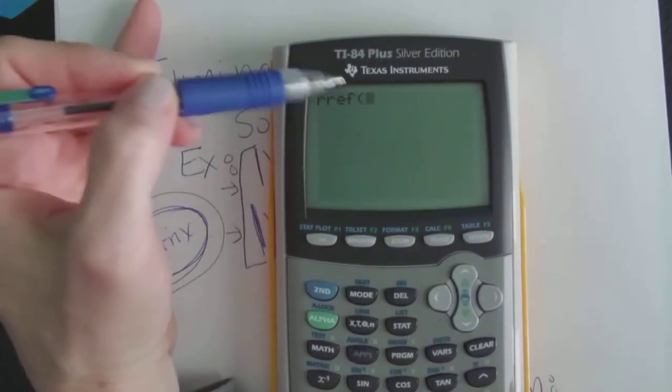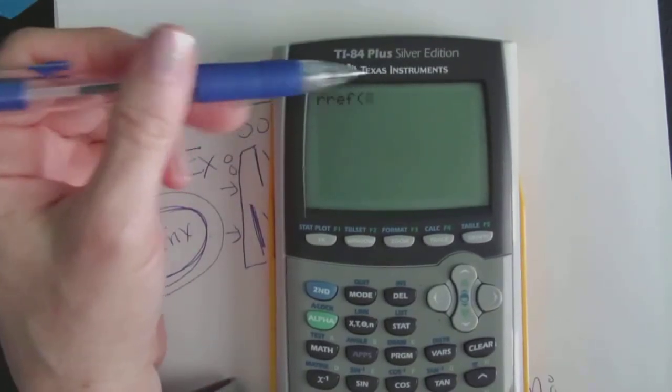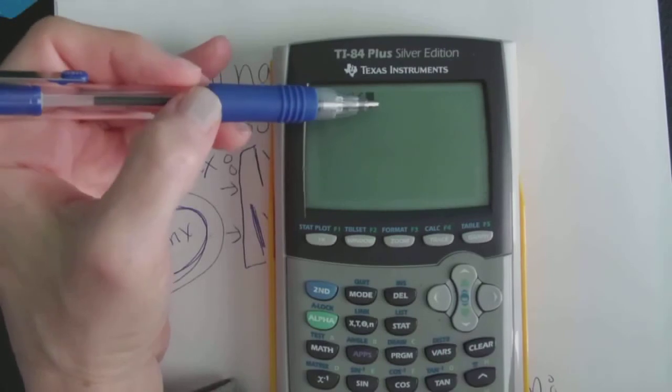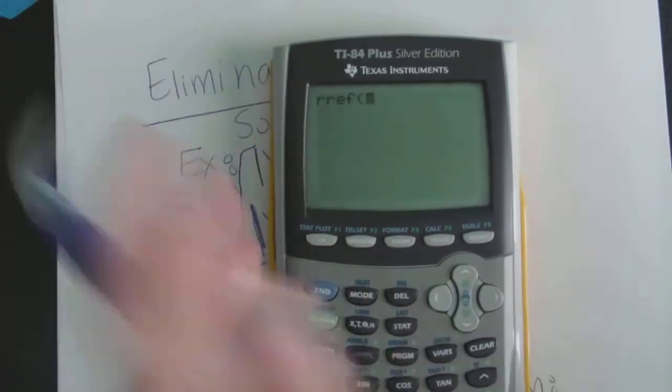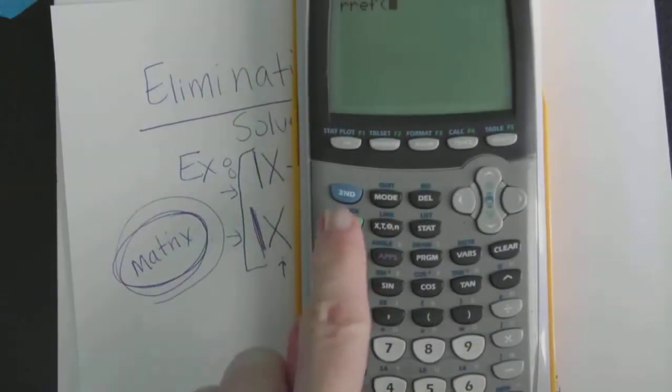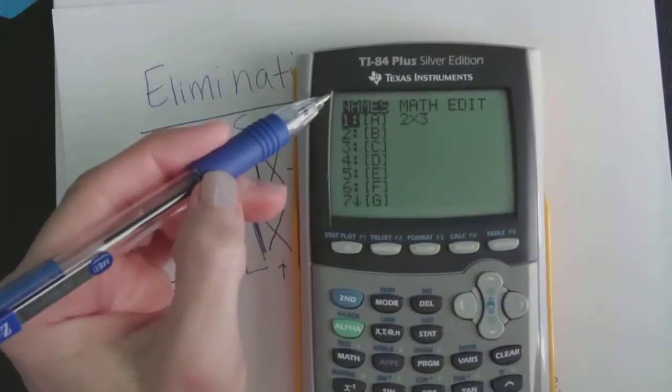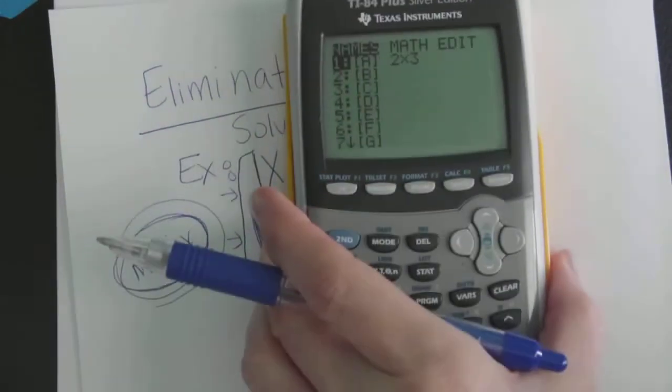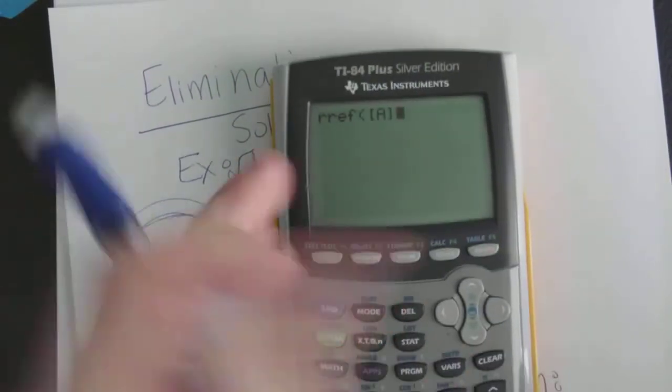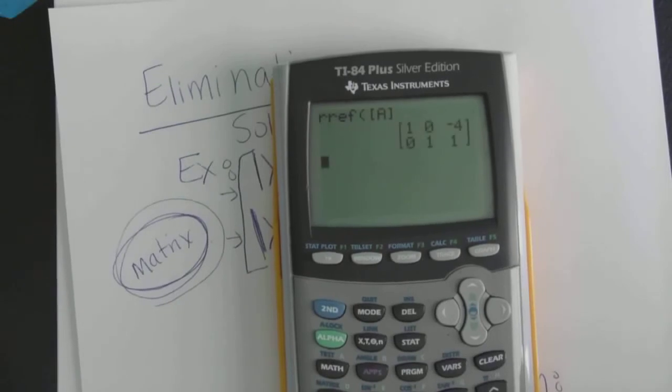And this comes up. So basically this R-R-REF is you're commanding the calculator to, hey, solve my matrix now. Solve the system. The last thing you have to input here is which matrix are you talking about? We actually have to let the calculator know that it's that matrix A where we stored our data. So one last time you have to go in second matrix and you have to tell it, you have to name it. This one, number one, which is already highlighted.